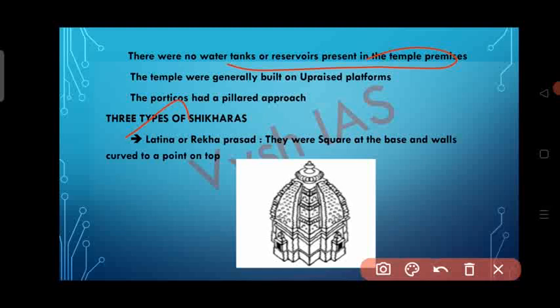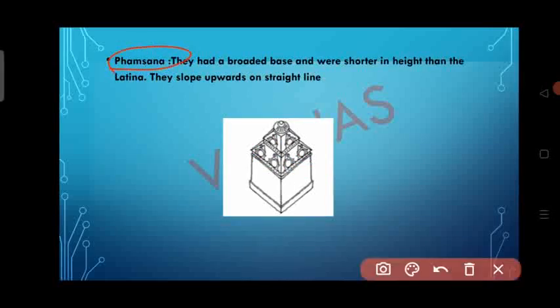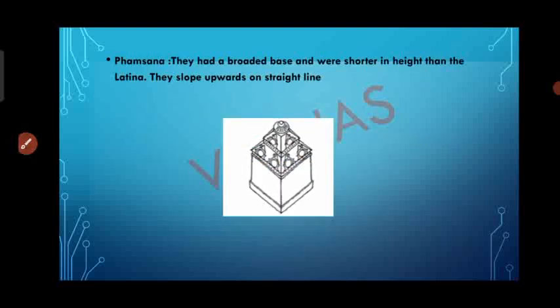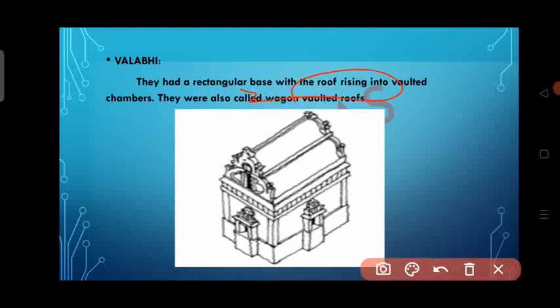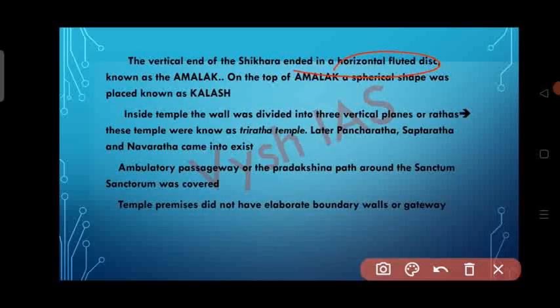There are three types of Shikaras in the Nagara school. The first is Latina or Rekha Prasad — square at the base with walls curving to a point on top. The second is Phamsana — with a broader base, shorter in height than the Latina, sloping upward in a straight line. The third is Valabhi — with a rectangular base and a roof rising into a vaulted chamber, also called a wagon-roofed vaulted roof. The vertical end of the Shikara terminates in a horizontal fluted disk known as the Amalaka, and on top of the Amalaka a spherical shape is placed known as the Kalasha.